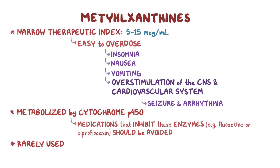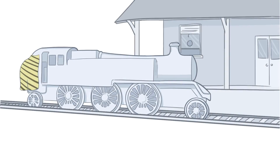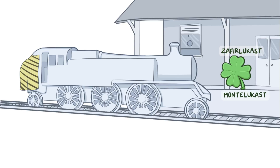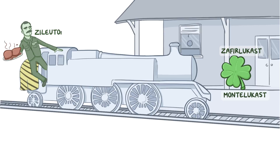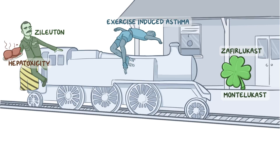Now we want to make a simple and fun mnemonic to help you efficiently memorize and retain all these pharmacology facts. For the leukotriene-modifying agents, let's use a white train. The train stop represents the target receptor, so we'll put the leukotriene receptor antagonists here. Since they have 'lukast' in their name, let's put a four-leaf clover here for montelukast and zafirlukast — hopefully they'll make our luck last. The back of the train represents leukotriene synthesis inhibitors — an army lieutenant named Z for zileuton, holding a big rotting liver to represent hepatotoxicity. A track-and-field athlete represents exercise-induced asthma trying to jump over the train with giant springs on his shoes, representing aspirin-induced asthma — helping you remember leukotriene-modifying agents are effective against both.